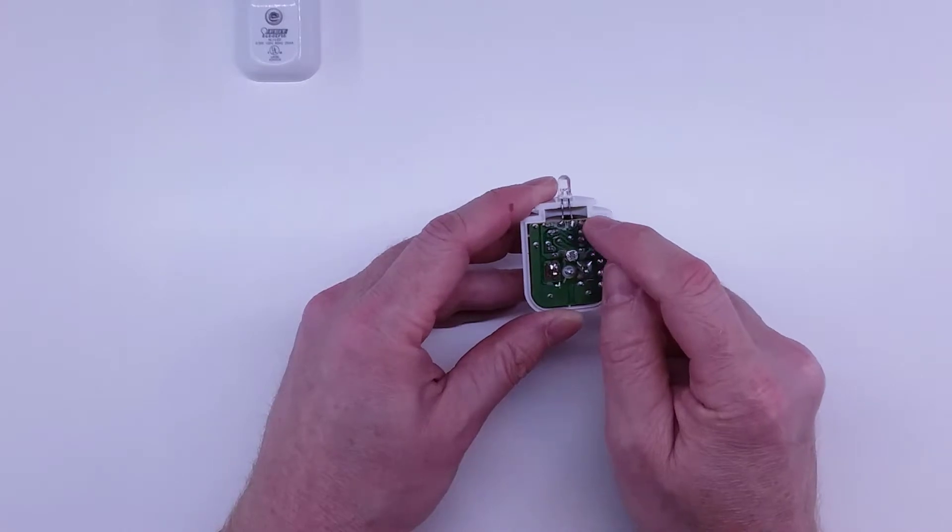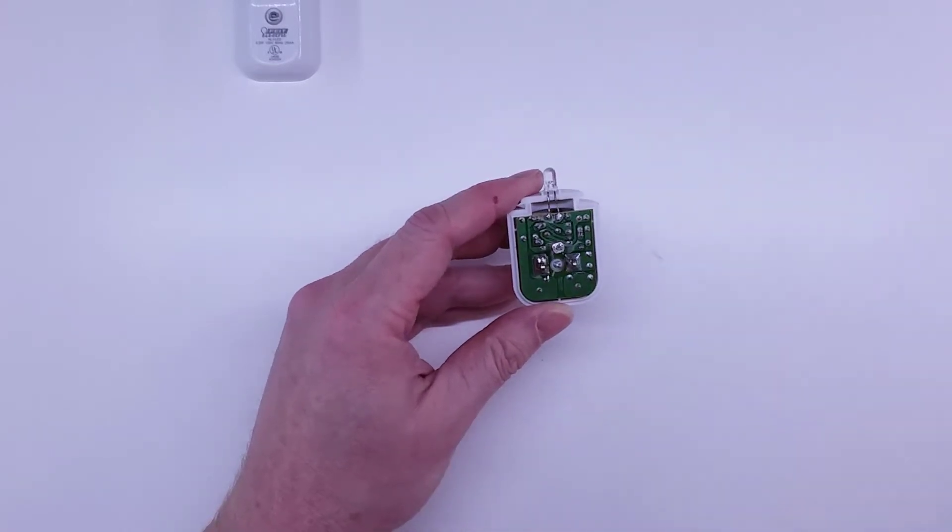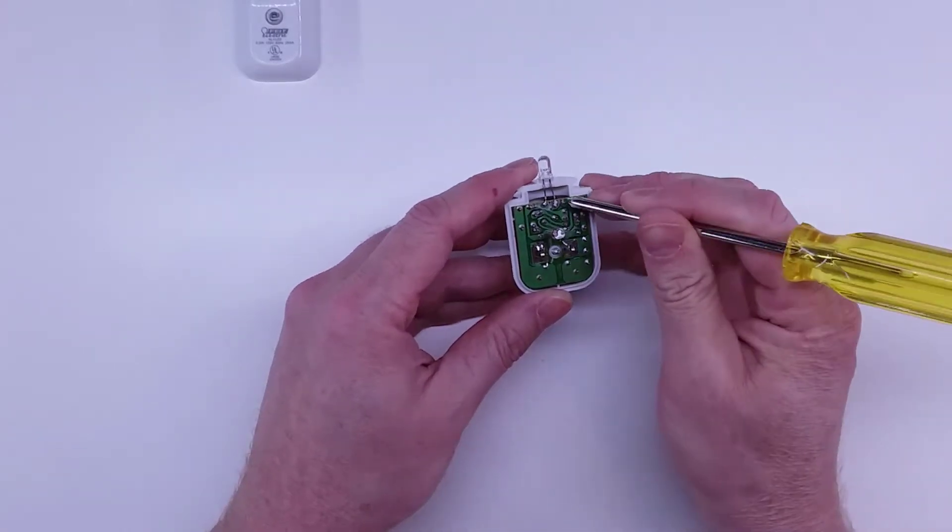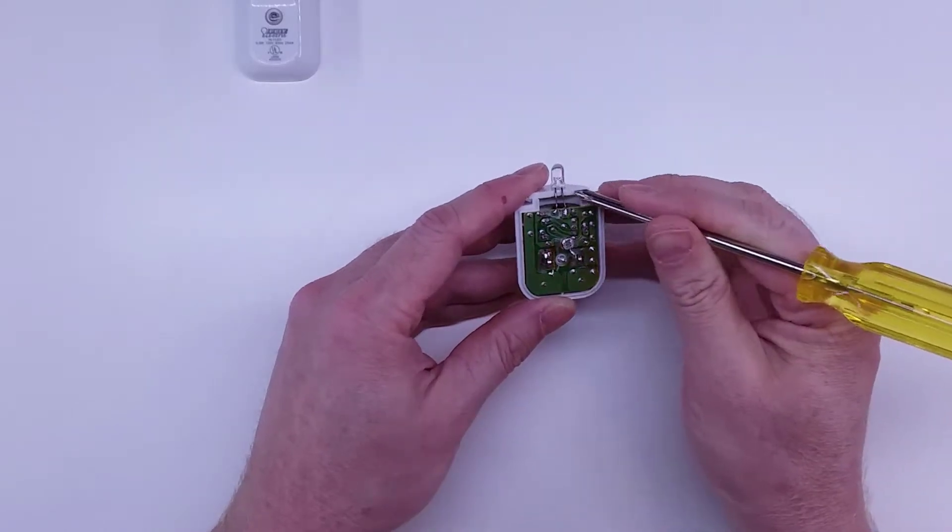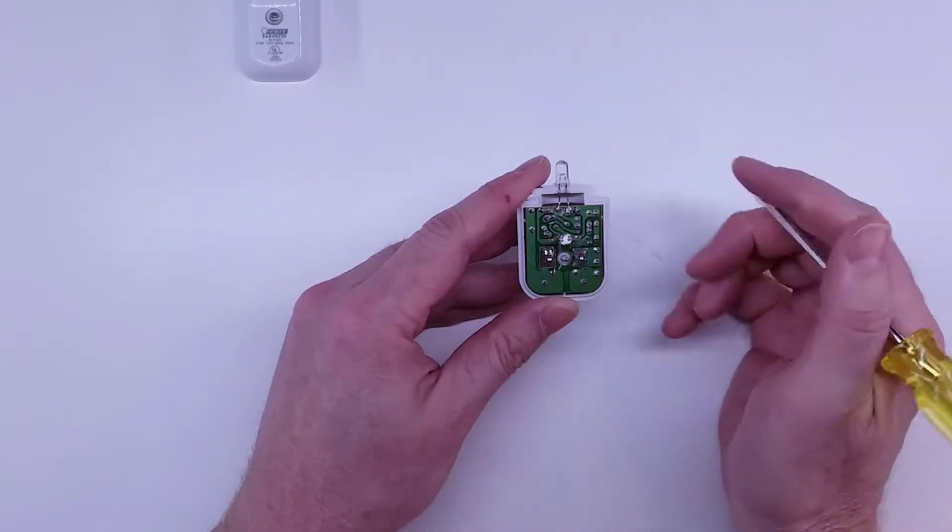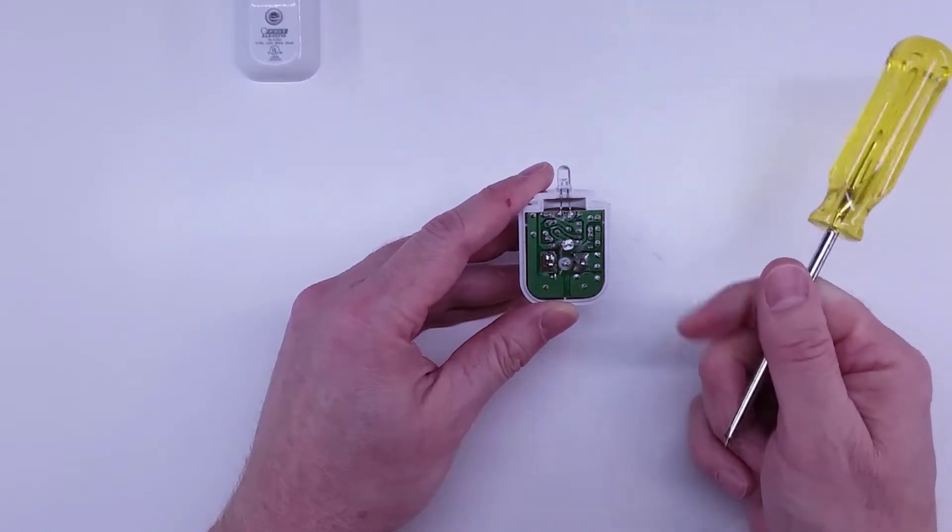If I flip it around, you'll see it does not light. This is an easy way to tell which side is the positive and which is the negative. Now I would just mark on the right hand side with a sharpie, indicating that's the positive. That's going to be important later when we replace this LED.